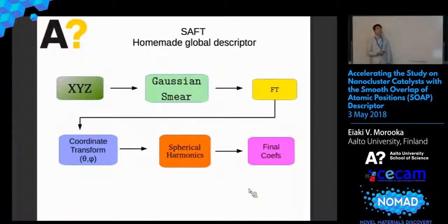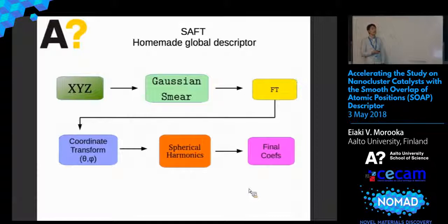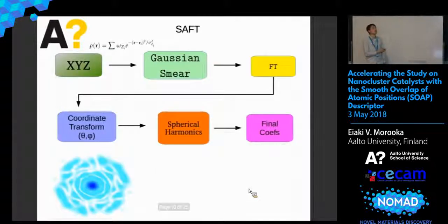We initially tried to develop a global descriptor originally based on an image recognition algorithm, but we tried to make it into 3D. We ended up finding out that it's actually basically soaked in Fourier space. But this gives a very good idea of how getting rid of the symmetries works.